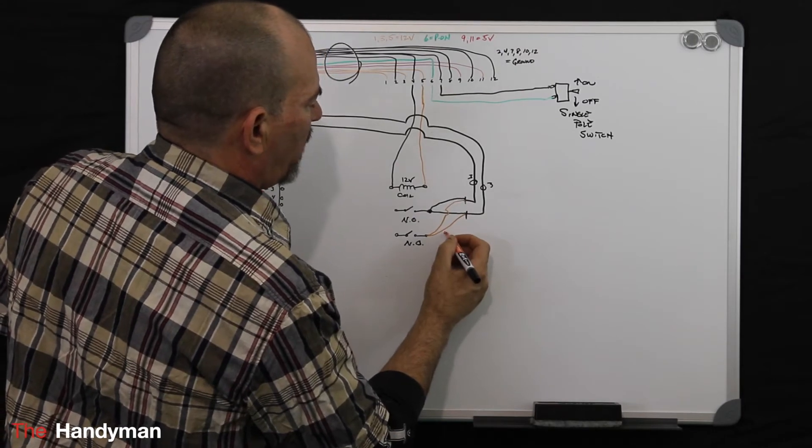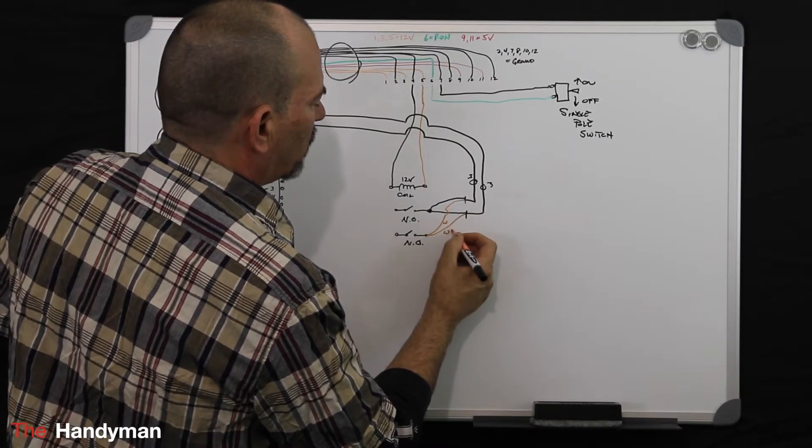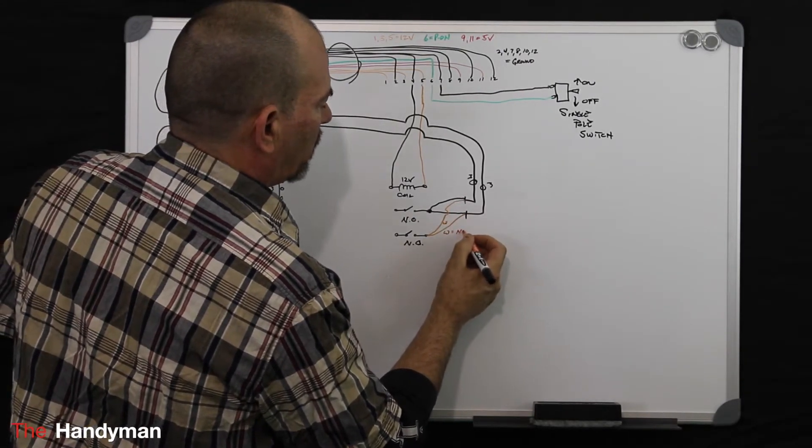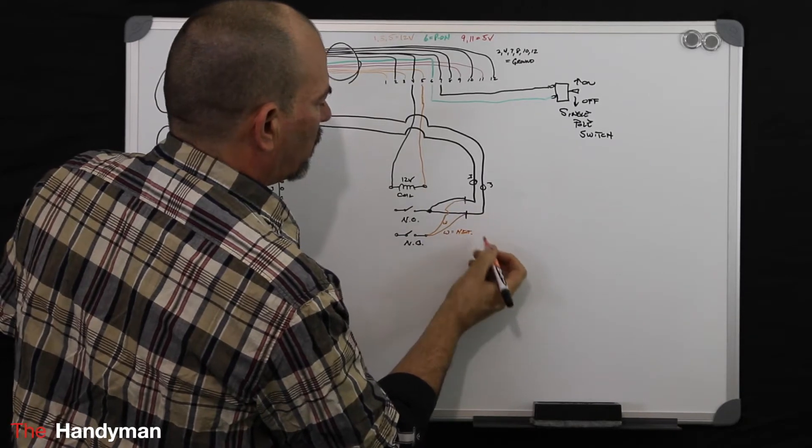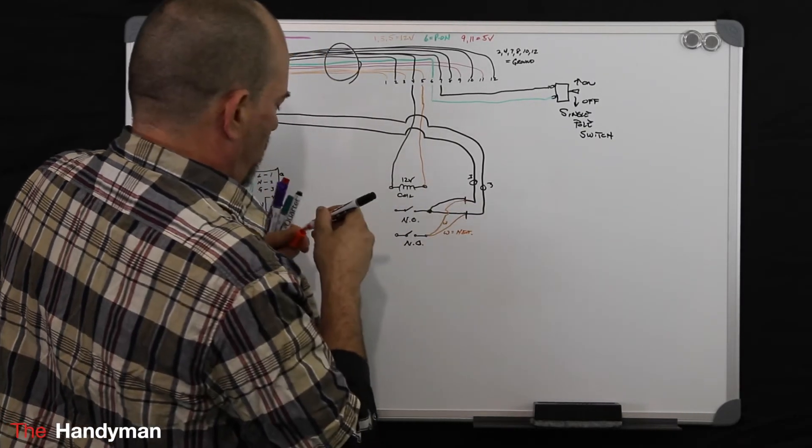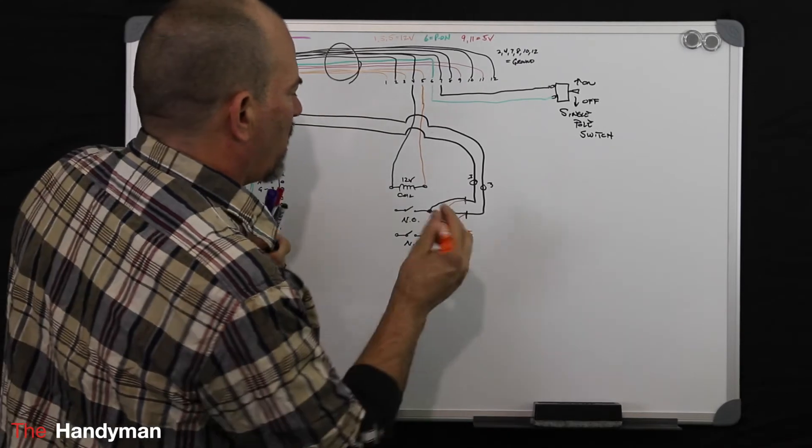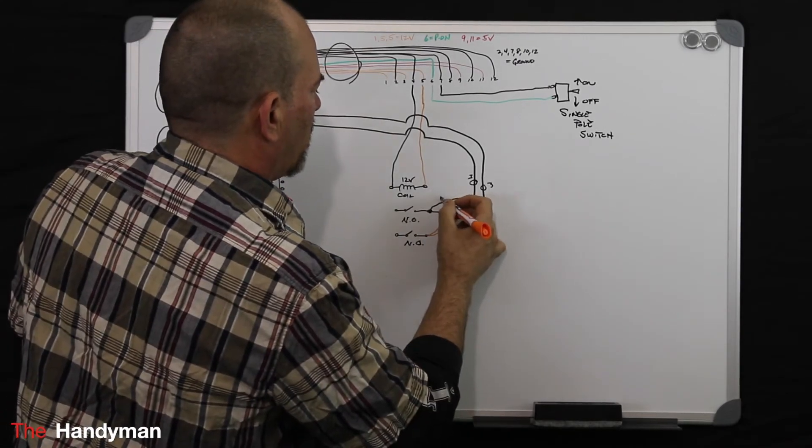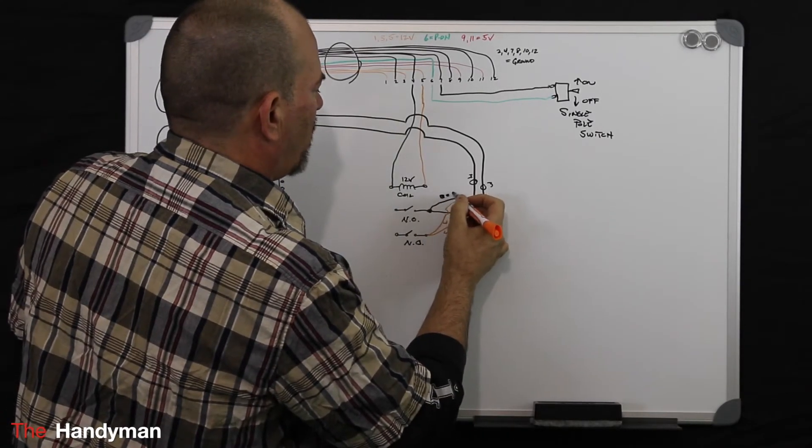So these are your whites, which is your neutral, and these wires are your blacks, which equal hot.